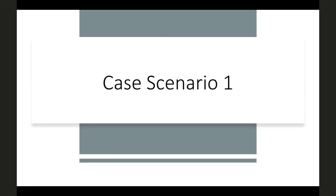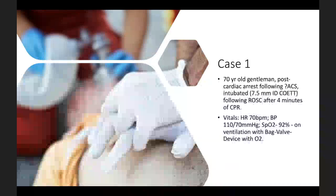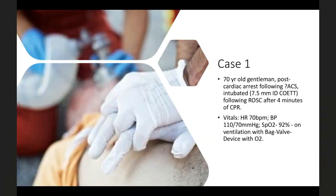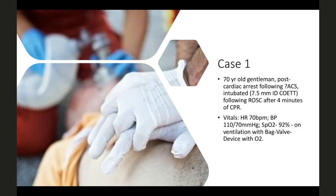The first case is a 70-year-old gentleman who had cardiac arrest following acute coronary syndrome, attaining return of spontaneous circulation after four minutes of CPR. He is intubated with a 7.5mm internal diameter cuffed endotracheal tube. Heart rate is 70 bpm, sinus rhythm with occasional ectopics, BP 110/70 mmHg, and SpO2 hovering around 90–92%, currently being ventilated with a bag-valve device.